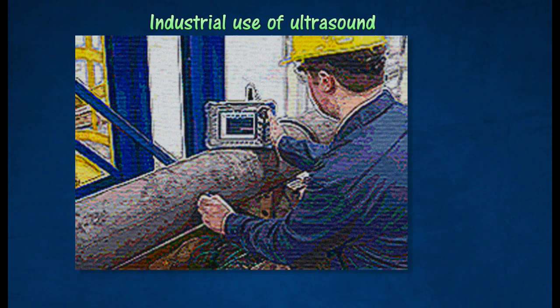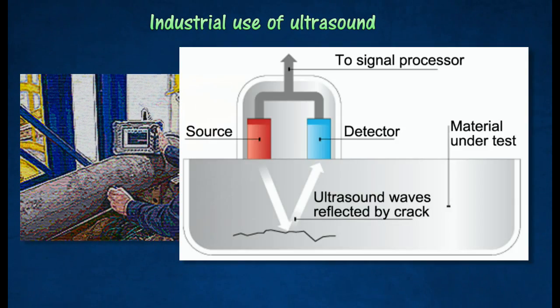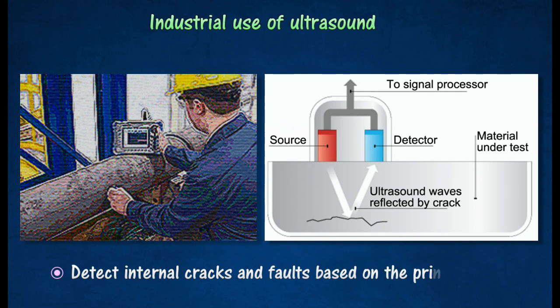Ultrasound sent into metal structures and engine parts can detect internal cracks and faults, based on the principle of echo sounding.